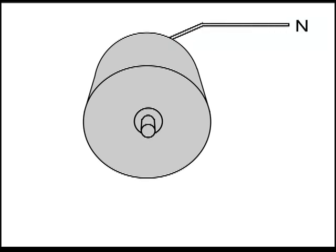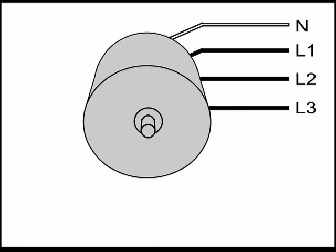One of them is the so-called neutral, which is equivalent to the junction point of the batteries. The second wire is called L1 or phase one, the third one is called L2 or phase two, and the fourth one is called L3 or phase three.